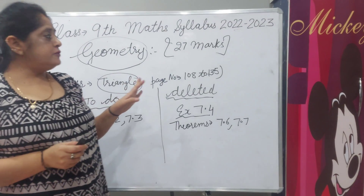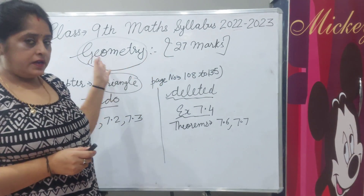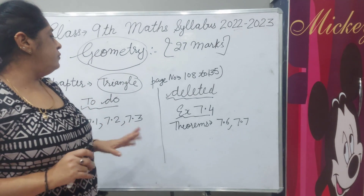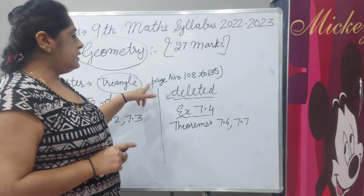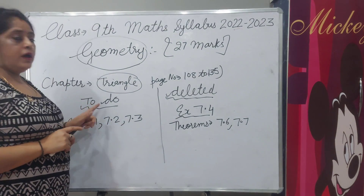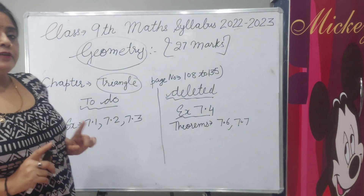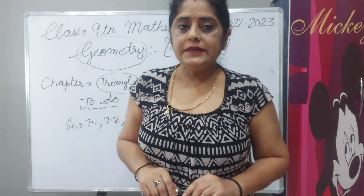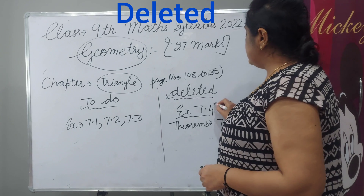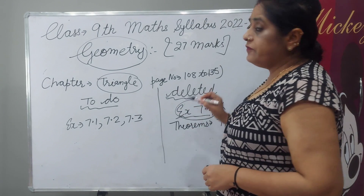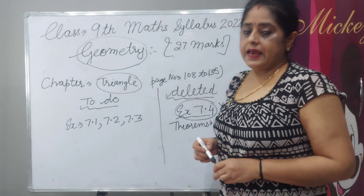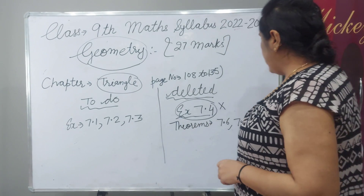The chapter triangles is part of geometry — total 27 marks will come. Triangles chapter is in NCERT book page number 108 to 135. You have to do exercises 7.1, 7.2, and 7.3. Exercise 7.4 is deleted from your syllabus for this year. And two theorems, 7.6 and 7.7, you have to note down.